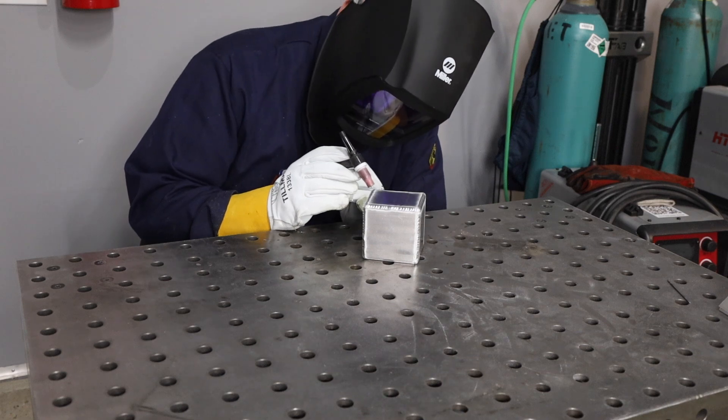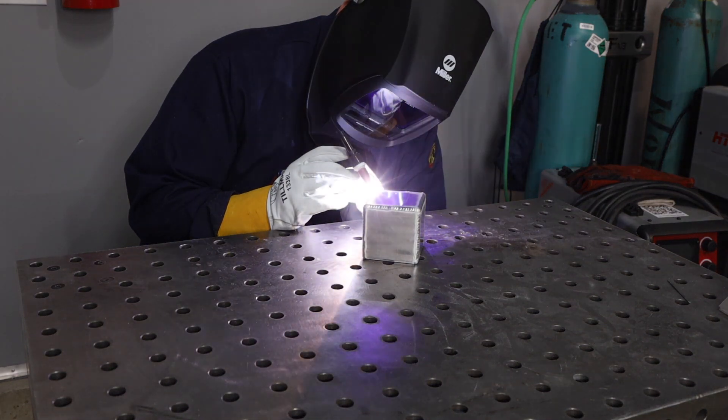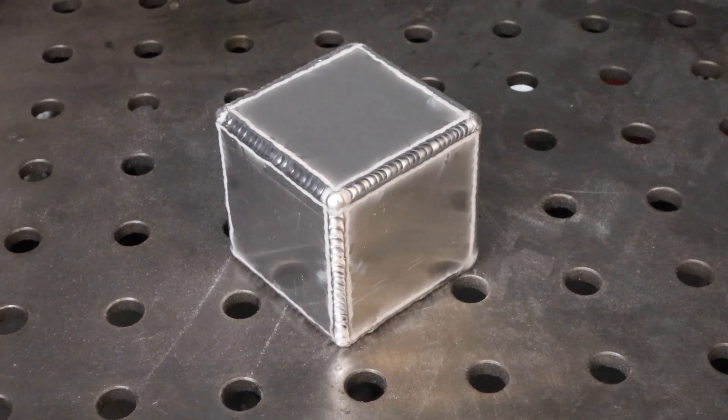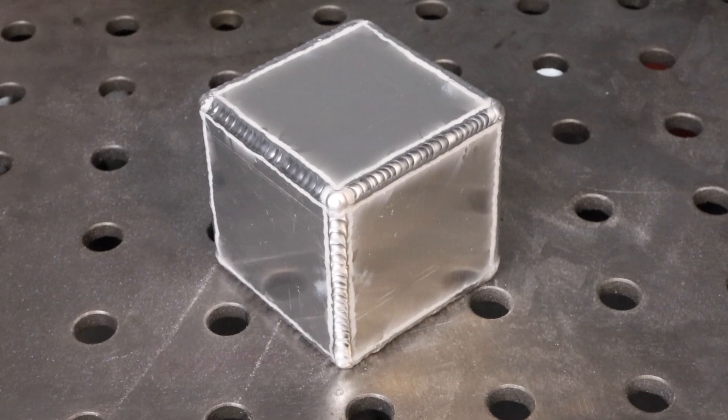I just take a second on each corner and then strike an arc real quick to help clean it up and round it over and the cube itself is done. Well at the end of the day, this cube turned out pretty well. It's not perfect, but I'm definitely happy with it.